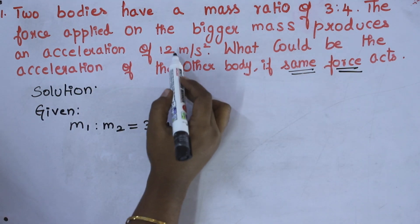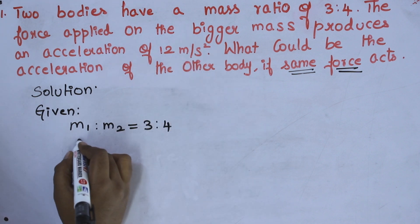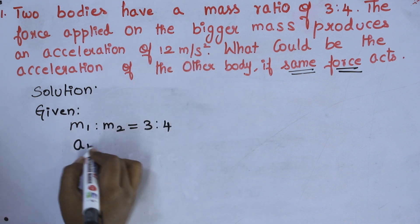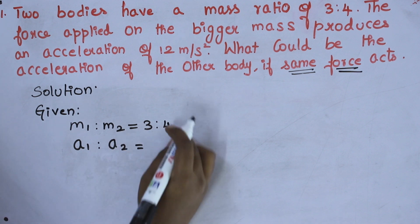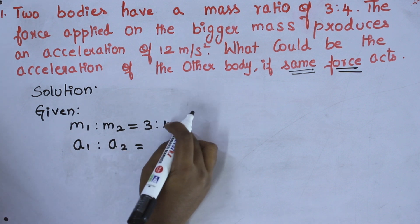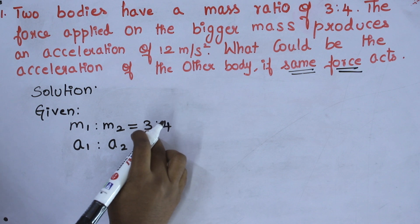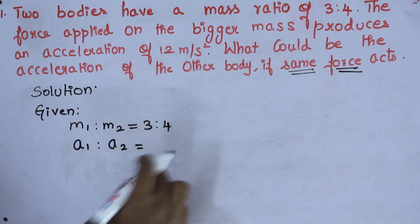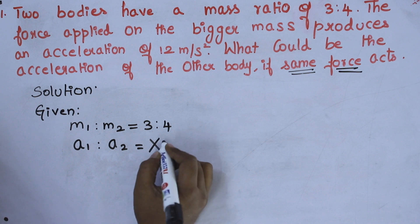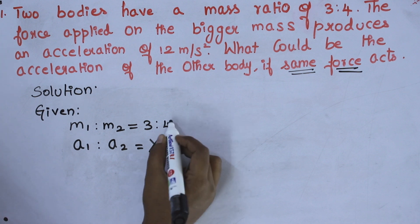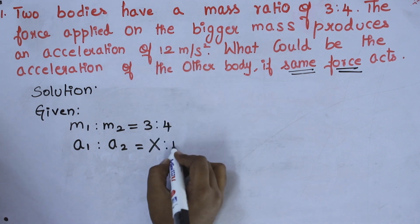For mass 4, the acceleration is 12 meter per second square. So A1 is to A2: for mass 4 they have given acceleration as 12. For mass 3, they didn't give, which we have to find. I am taking it as capital X, the unknown value. And for mass 4, they have given the acceleration as 12.